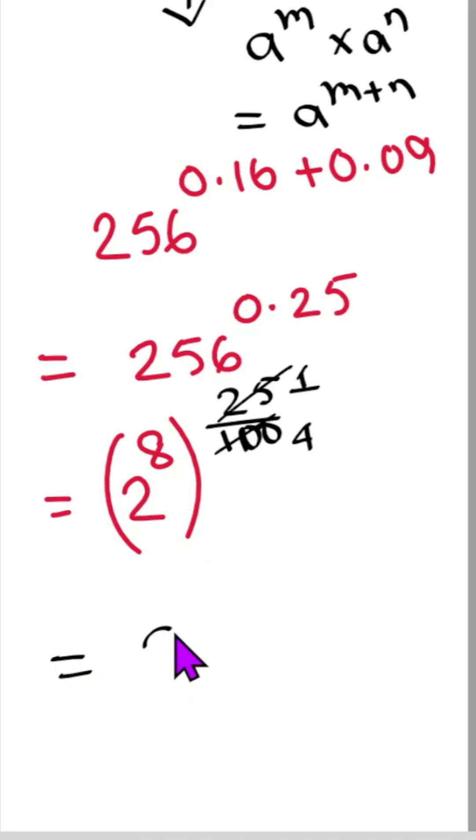Now, very simple thing, 2 to the power 8 times 1 by 4. We can divide 8 by 4. It will be 2. So finally, 2 squared means 4. Thank you.